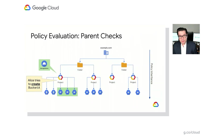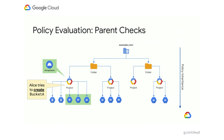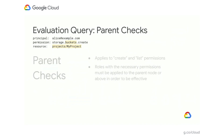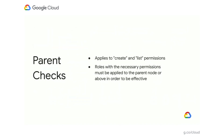One more thing before we move on, just because sometimes this trips people up. For some types of permissions, they're checked relative to the parent node compared to where you might think they would be. Let's take the example of Alice trying to create a bucket. She's exercising the storage buckets create permission, but the resource upon which this check is being performed is the project in which she's trying to create the bucket. These parent checks occur on permissions related to creating new resources, as well as listing resources within a certain node. So particularly for list permissions, make sure you've granted these on the parent container if you wish for a user to be able to enumerate all resources of a certain type within that container.